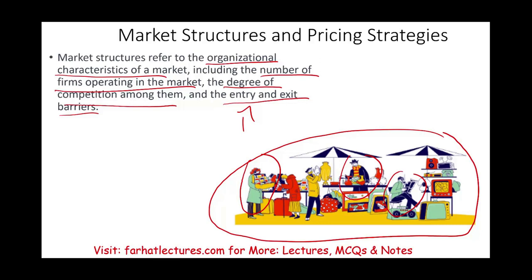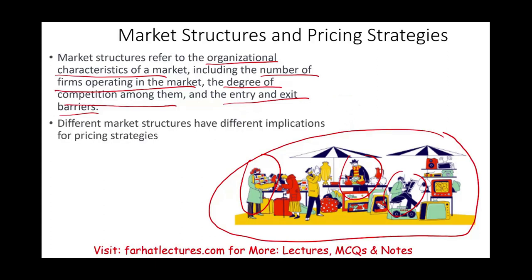It all depends on how many people can enter this market. Let's assume this is operating in a small town. If the municipality of the small town allows three other firms to operate and everyone is selling the same product, then their pricing strategy will change. So different market structures will have different implications for pricing strategies.